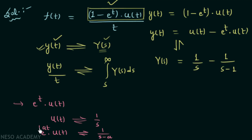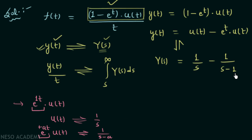Here we have a positive sign in the exponent, so we have a negative sign in the denominator. Comparing e^t with e^(at), we find a equals 1, so in place of a we substitute 1, giving us 1/(s minus 1).